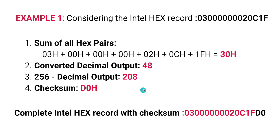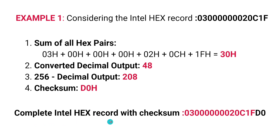When the decimal output 208 is converted to hexadecimal we get D0, and this is our required checksum. We can append this to the hex record, which gives us the complete Intel hex record — D0 is appended to the rest of the hexadecimal digits.